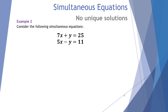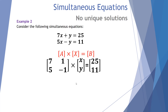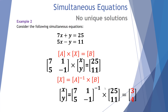Example number two. The equations we have are 7X plus Y equals 25 and 5X minus Y equals 11. We use our general format: coefficient matrix A is [7, 1, 5, -1], X is the unknown matrix [X, Y], and B is the result matrix [25, 11]. We rearrange to find the unknown by taking the inverse of A and multiplying it by B, which gives us an answer of X equals 3 and Y equals 4.